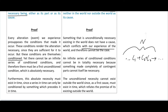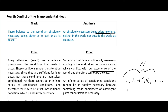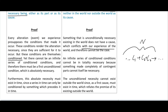So we're ruling out the infinite series of contingents as the necessity. The unconditioned necessity cannot exist outside the world either, since as a first cause it must exist in time, which refutes the premise of it existing outside the world. The antithesis says there is no necessity of this kind. Once again Kant says these are equally valid but mutually inconsistent — thesis and antithesis. In the next video, he will continue with explanations of this and how Kant actually wants to try and solve these antinomies.